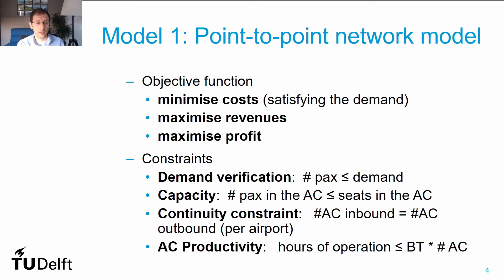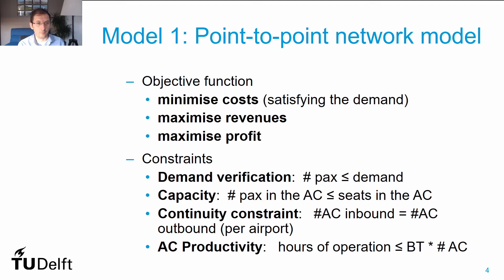In terms of constraints, the most common ones considered are demand verification, which says that although I make profit from transporting more passengers, I cannot transport more passengers than the demand that I have for that specific market. Also, in terms of capacity, I need to limit the number of passengers I want to transport by the seats that I'm offering in each flight leg. And I want to guarantee that no aircrafts pop up or disappear in my network, so I need to guarantee the continuity of aircraft flying in my network by forcing that the number of aircraft landing in a given airport is equal to the number of aircraft departing from that same airport.